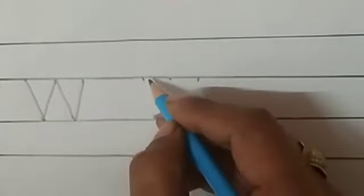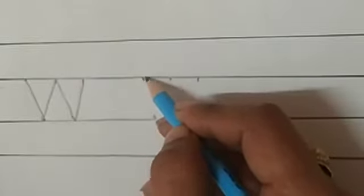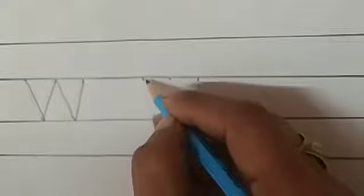Write again. Start from the middle line. Kaan se shurru karengi hai? Middle line se. Jo, ma'am ne dot put kia. First dot se.